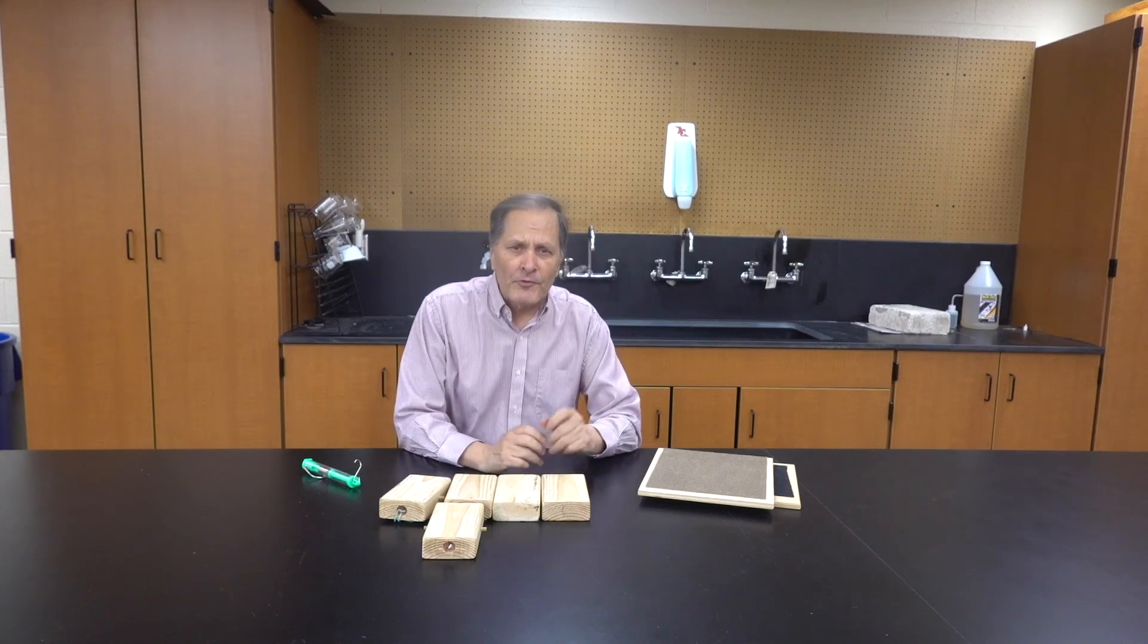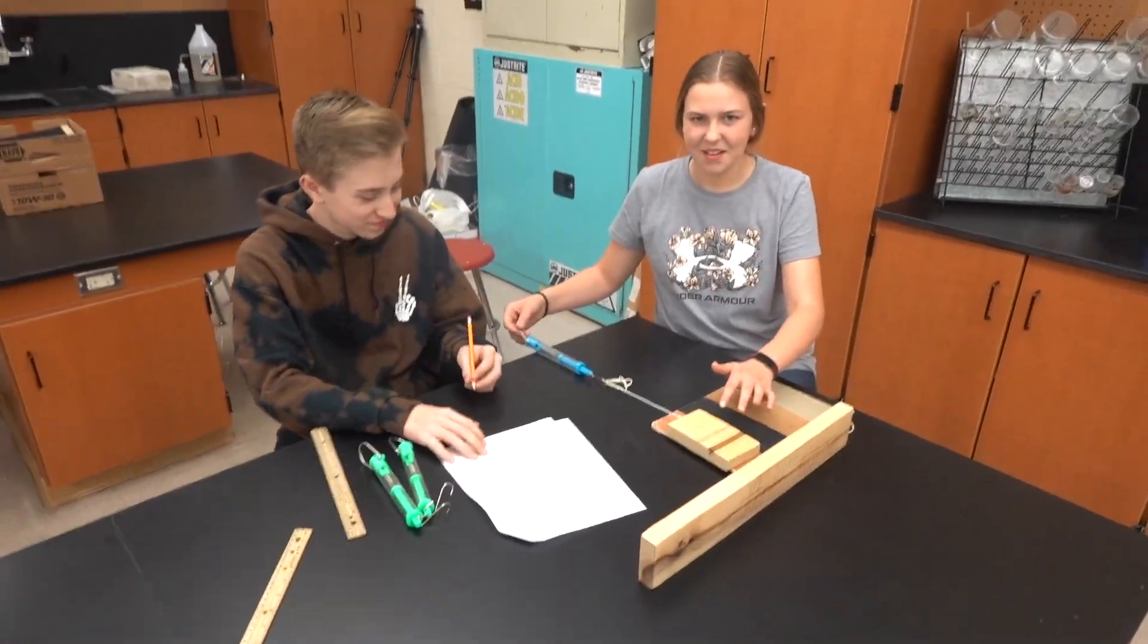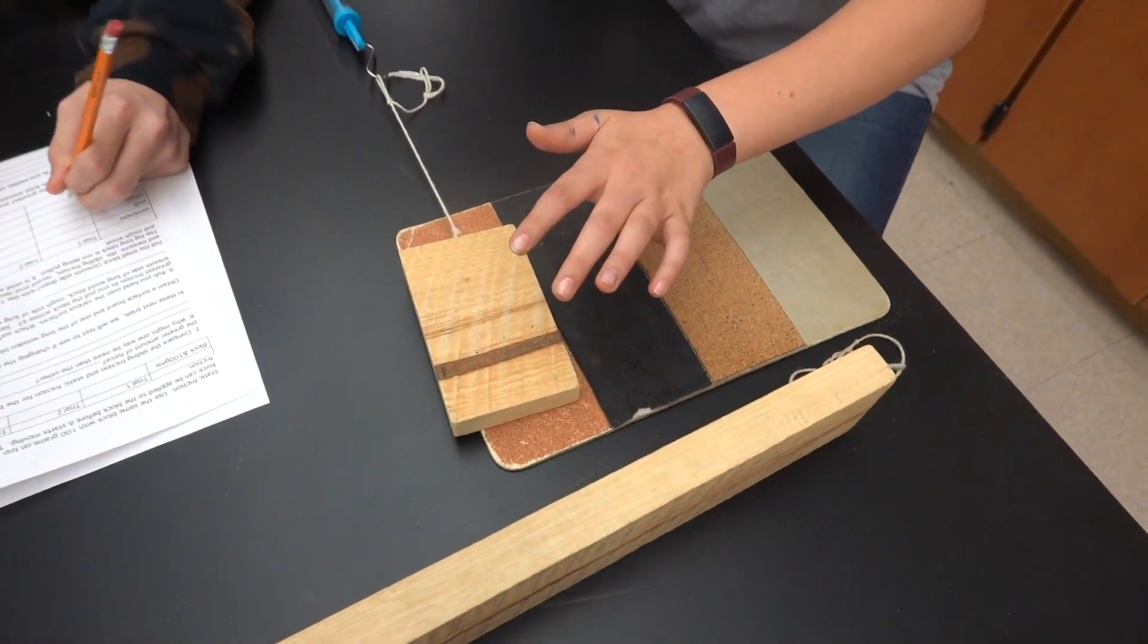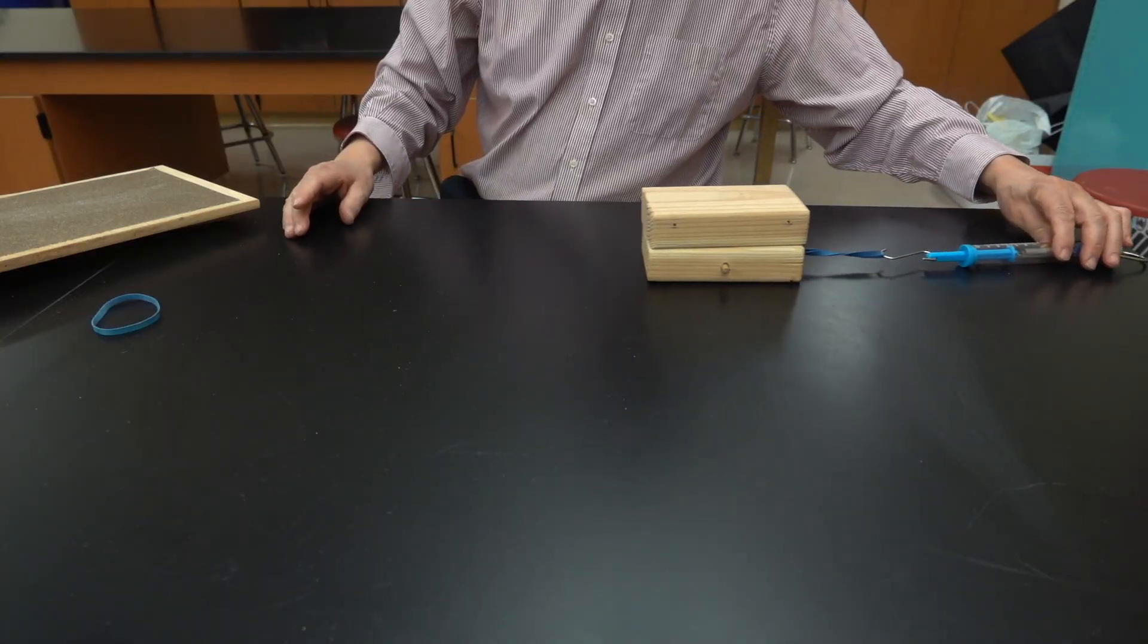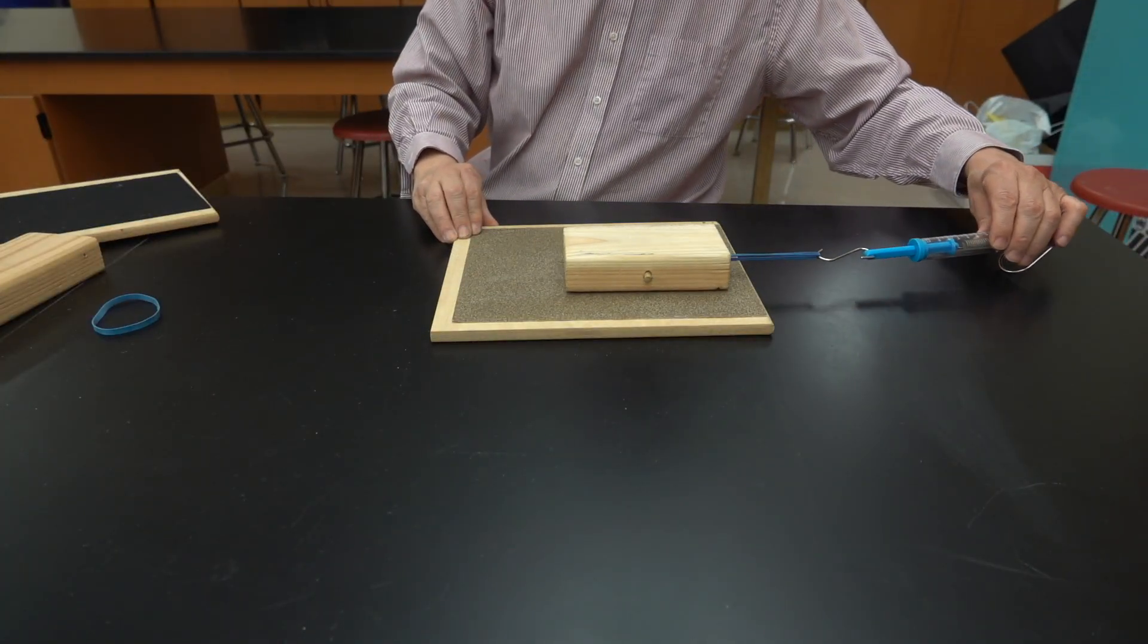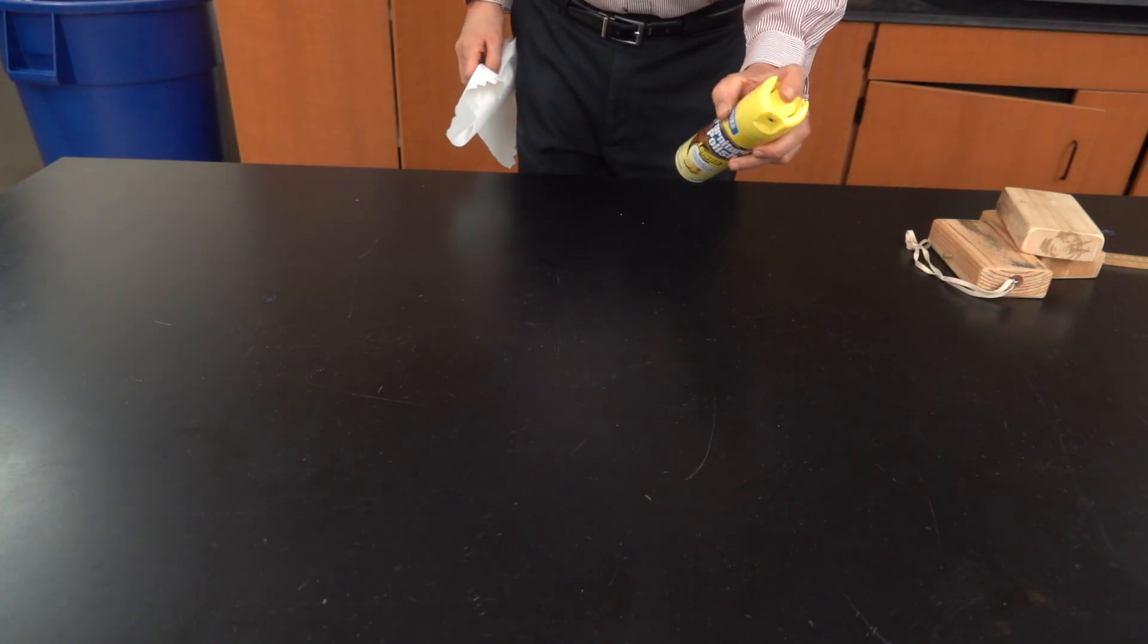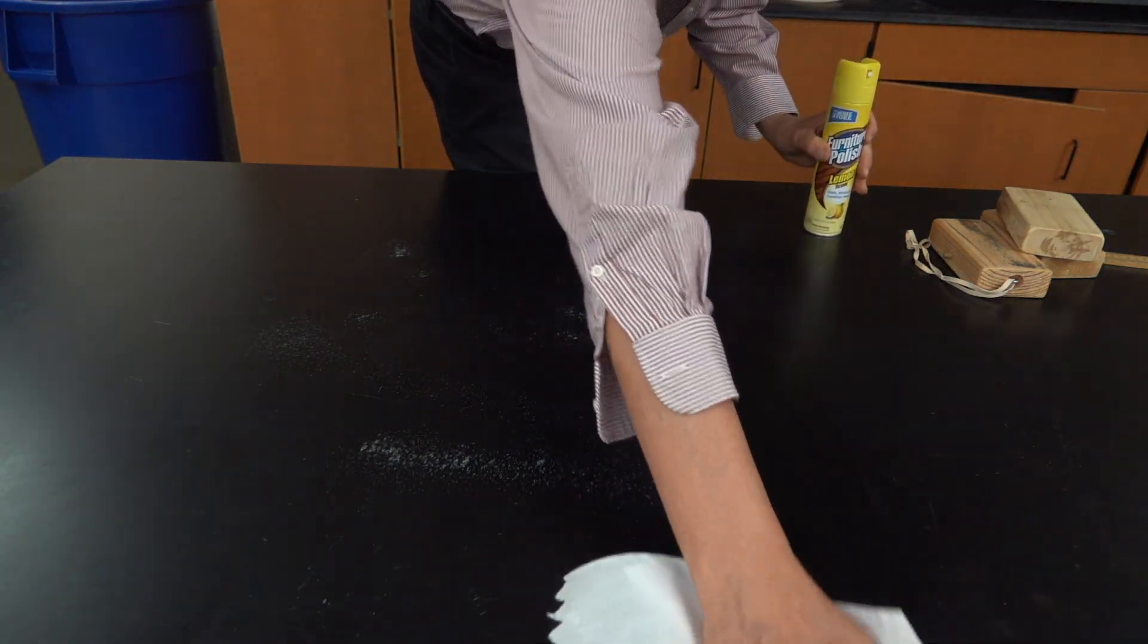Now another area that I use these blocks for is a basic demonstration of friction. Students have a lab activity where they measure how friction affects various surfaces. After completing the lab, I can then go over the results on a larger scale using the blocks. One suggestion is to use furniture polish on a table before using it to let the blocks slide easier.